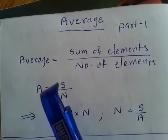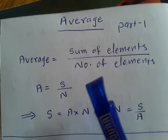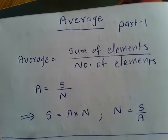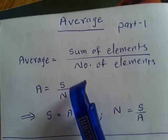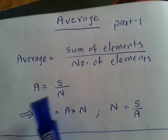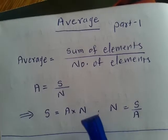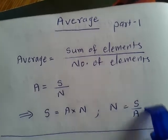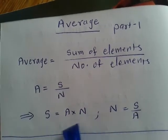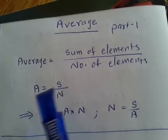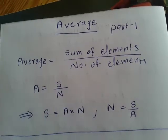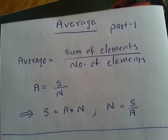The simple formula of averages is: sum of elements upon number of elements. A is equal to S upon N — sum upon number. From the same formula we can also find sum if average and number are given: Average into Number equals Sum. And Number of elements equals Sum upon Average. You don't have to memorize all these separately. When you know Average equals Sum upon Number of elements, you can solve all other examples.